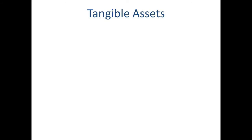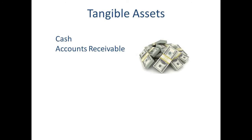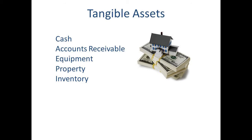First, we have tangible assets. This would include stuff like cash, accounts receivable, any type of financial assets, and it would also include physical stuff like equipment, property, inventory — anything you can touch. So tangible assets are just anything physical or financial, and these are usually a little bit easier to understand. It's not too hard to figure out what they're worth in the market.